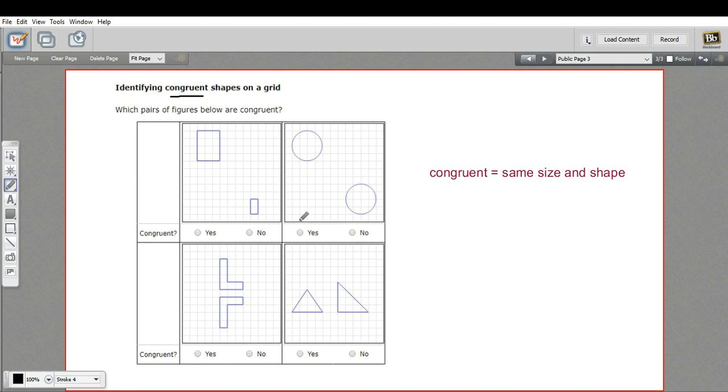You can probably tell right off the bat when you look at these two rectangles that they are not the same size and shape. If you weren't sure, you could count the length and the width and see that they're not the same at all. So these are definitely not congruent.